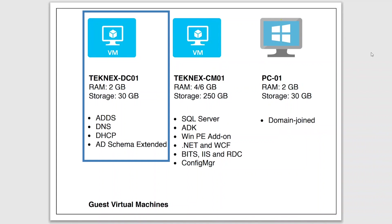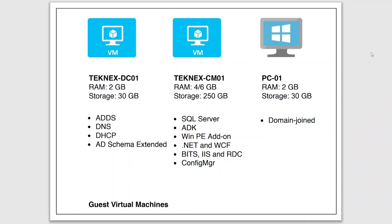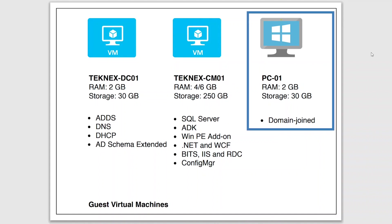The second virtual machine will be technext-cm01, with 4 to 6 GB RAM and 250 GB storage. We will install SQL Server, ADK, and all the other prerequisites for Configuration Manager. This will also act as the distribution point and management point. Once we have these two virtual machines, we need something for testing — that will be pc-01, where we will install the Configuration Manager client, deploy applications, and do other testing. This machine will be domain-joined to our domain controller.